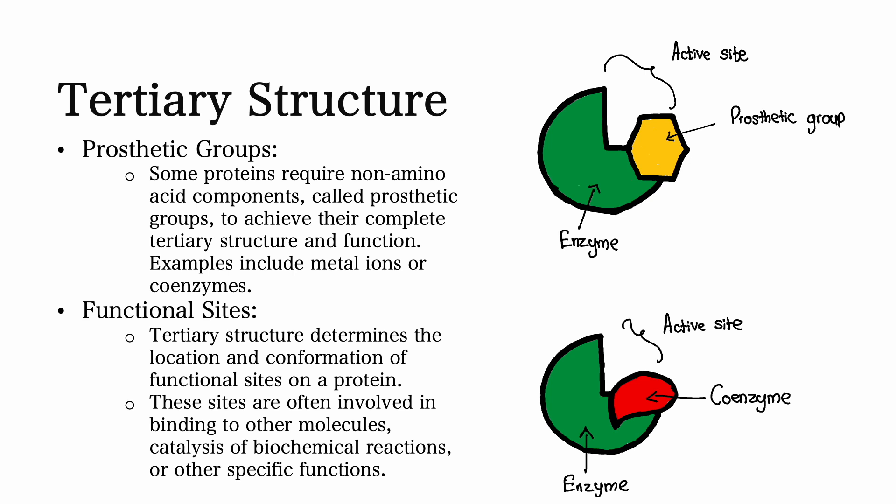When it comes to tertiary structures, prosthetic groups are something that needs to be discussed. Some proteins require non-amino acid components called prosthetic groups to achieve their complete tertiary structure and therefore perform their function. Examples of prosthetic groups include metal ions or coenzymes.